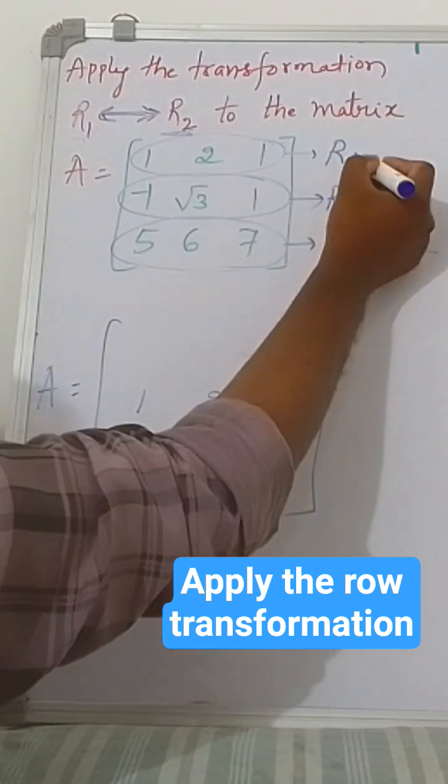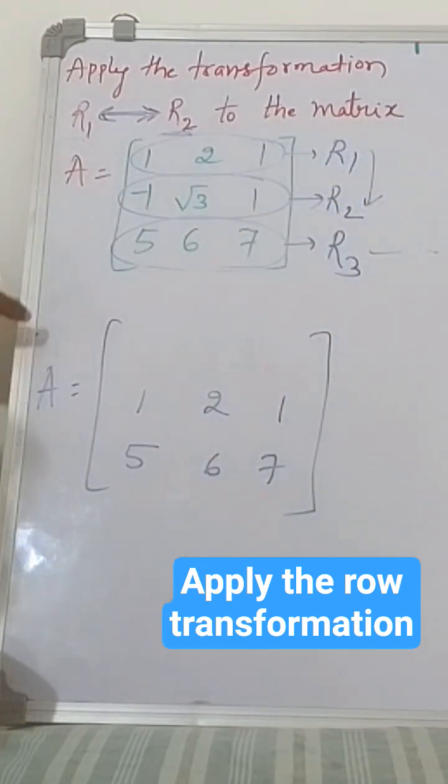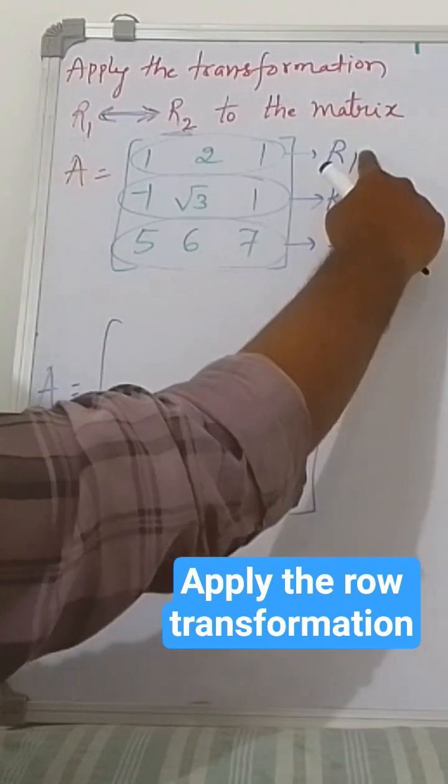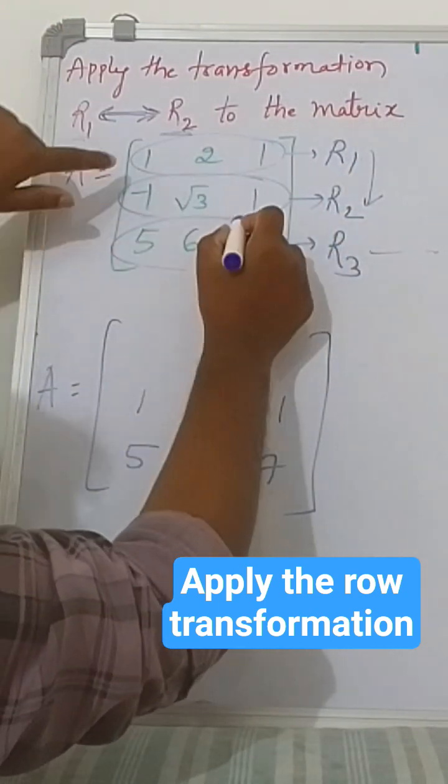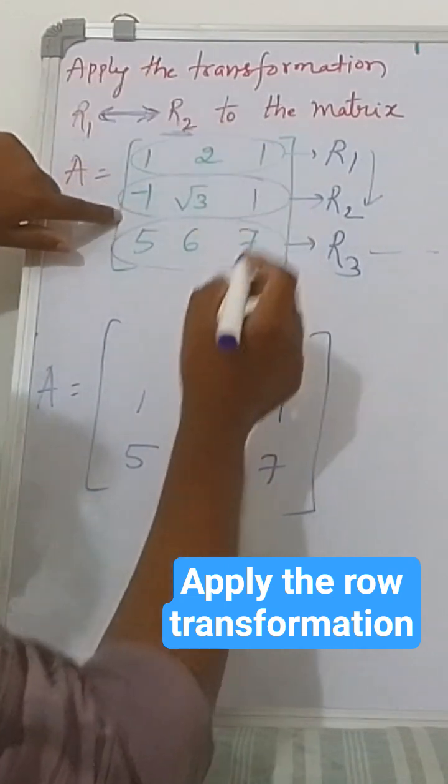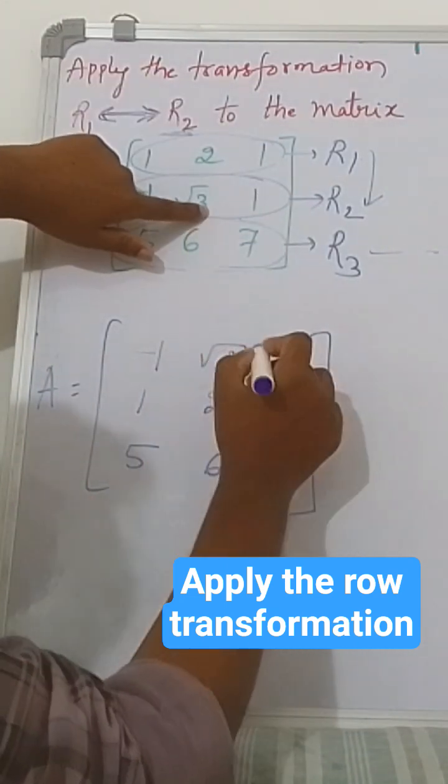So this r1 will go to this place. Next, r2, I have written in the place of r2. Next, this one we have to write in the place of r1, that means I will write here: minus one, root three, one.